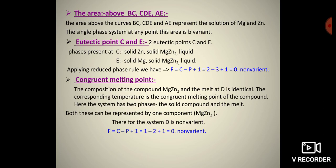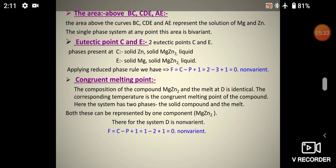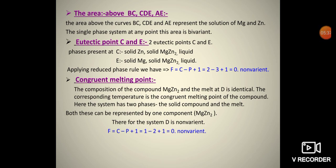The congruent melting point: the composition of compound MgZn₂ and the melt at D is identical, so the corresponding temperature is the congruent melting point of the compound. The system has two phases — one solid compound and one melt — both representable by one component, MgZn₂. Applying reduced phase rule: F = C − P + 1 = 1 − 2 + 1 = 0. Hence, the congruent melting point at D is non-variant.